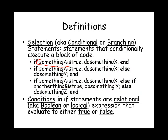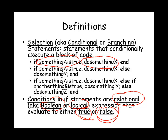Conditions in if statements are relational, also known as Boolean or logical expressions. These expressions evaluate to a single scalar logical value that will be either true or false. If it is true, then we go inside the if block and execute the chunk of code. If it is false, we skip the body of the if statement, moving on to the next line of code.